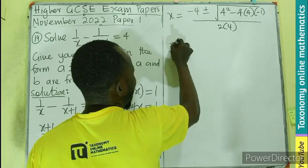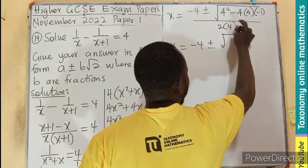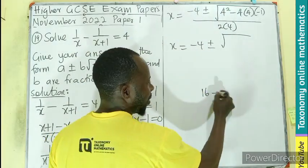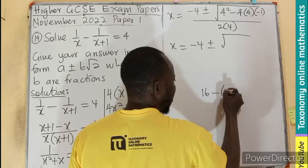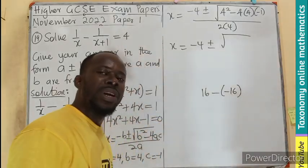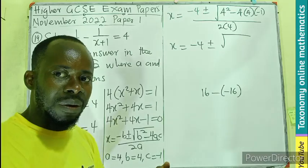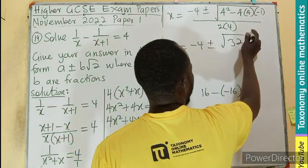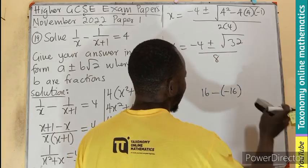So I'll be having my x equals to minus 4 plus or minus. This will be 16, 4 squared is 16. Minus 4 times 4, 16, times negative 1 will give you negative 16. So this becomes negative negative cancel. So 16 plus 16 gives us 32. In the numerator, 2 times 4 is 8.